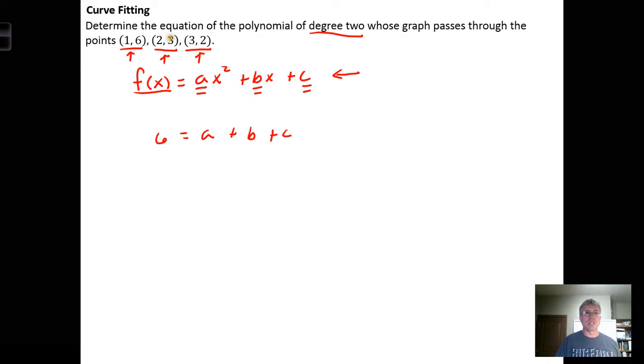Using the second point, the output is 3, so replace f(x) with 3. When the output is 3, the input should be 2. Plug 2 in for x: 2² = 4, 4 times a is 4a, plus 2 times b, plus the constant. So 4a + 2b + c = 3.